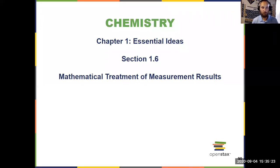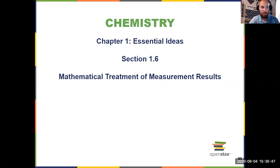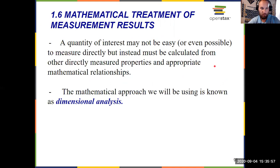Our final video for Chapter 1, which covers Section 1.6, Mathematical Treatment of Measurement Results, is all about learning to use dimensional analysis. If there is one thing I could recommend you start doing now and continue to use throughout this semester and however long you take chemistry, this would be it. Learn to use dimensional analysis, because it will save you from so many mistakes. I have a doctorate and I still use dimensional analysis.